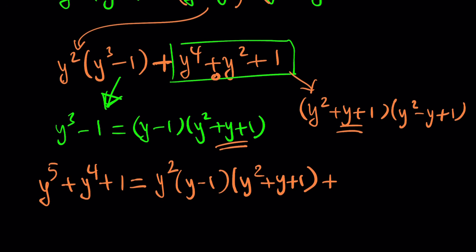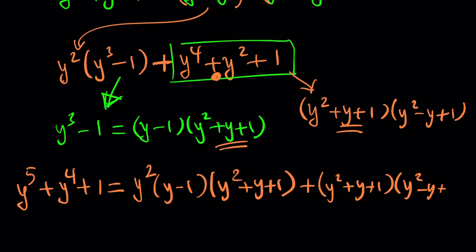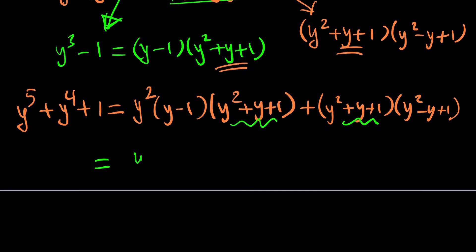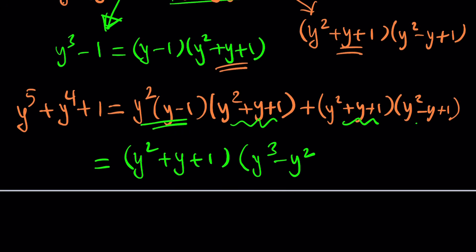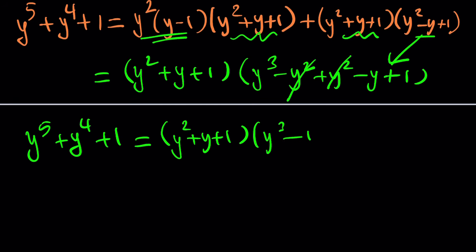Notice that y squared plus y plus one is a common factor in both pieces. Taking it out, you get y squared plus y plus one times the product of the remaining parts. The y squared terms cancel, leaving us with y squared plus y plus one times y cubed minus y plus one. So y to the fifth plus y to the fourth plus one can be factored into y squared plus y plus one times y cubed minus y plus one.